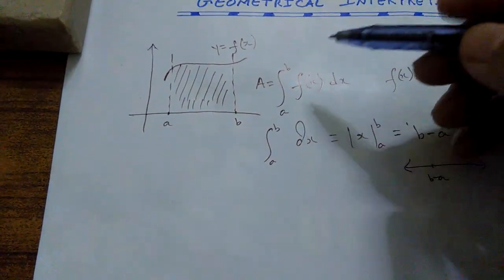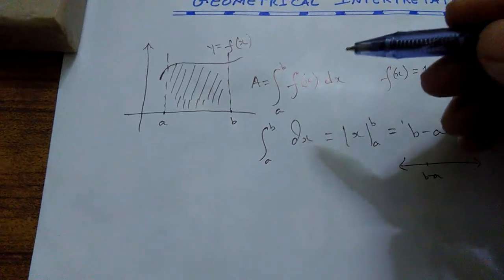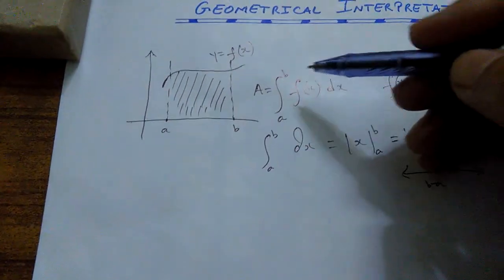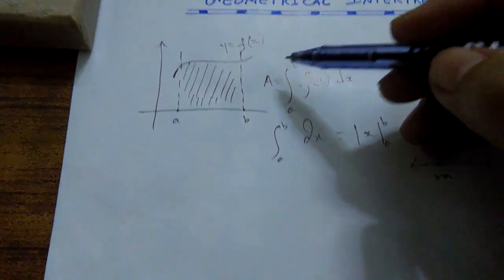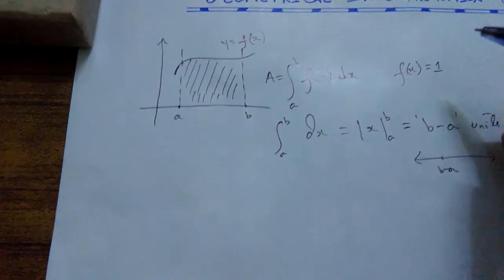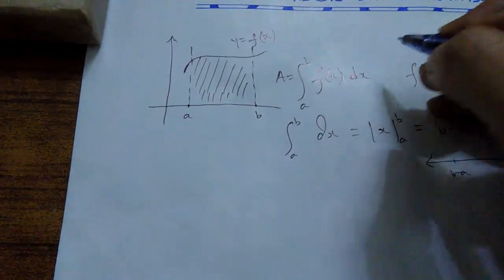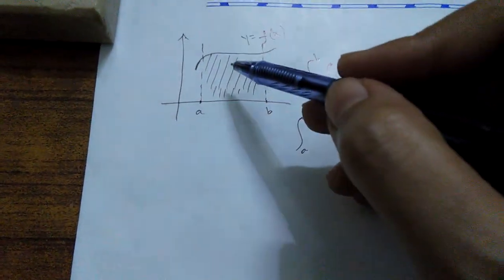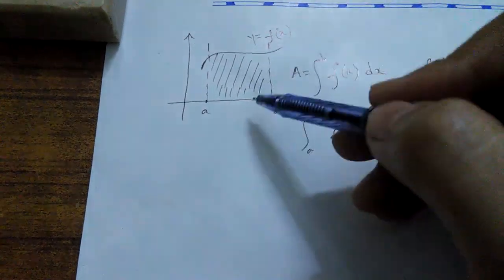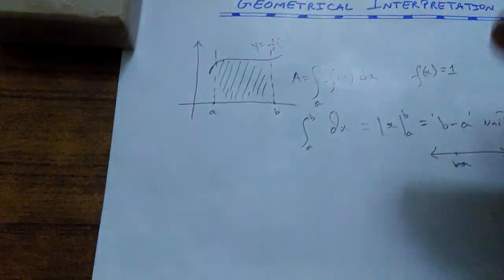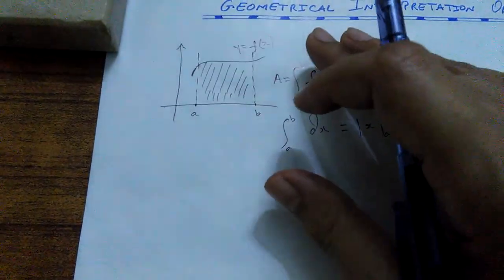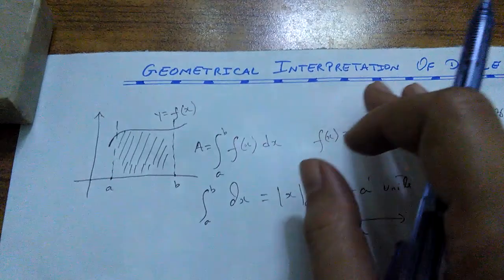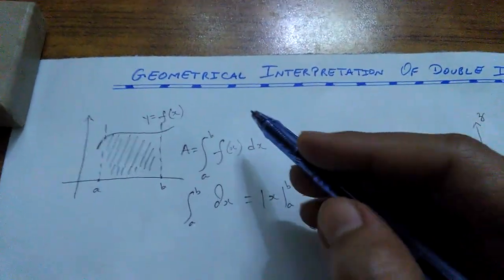On the other hand, if your f of x is expressed in the form of an algebraic expression, then you are definitely going to have a value expressed in square units, representing the area bounded under a certain curve. Now we are going to approach today's topic.